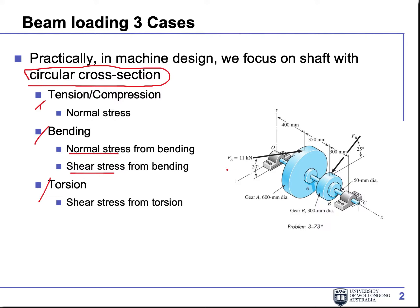In this figure, if you look at FA, it is off-centered and also perpendicular to the shaft. So FA by itself will cause both bending and torsion to this shaft. Then if you have any force along the shaft, you also have tension-compression.